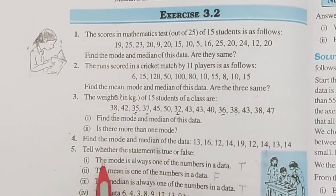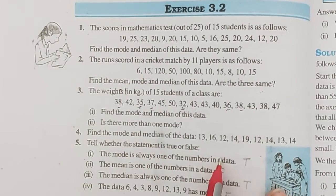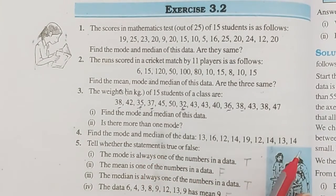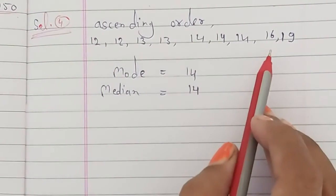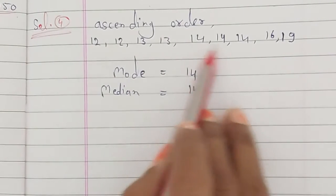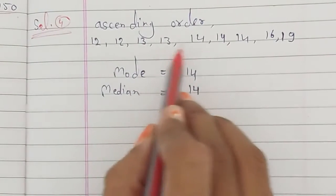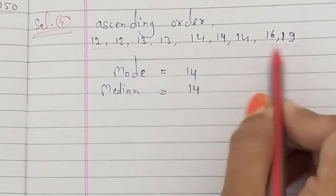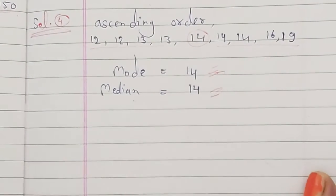Question 4: Find mode and median of the given data. Write in ascending order — small to big. Mode: looking at maximum frequency, 14 appears the most, so mode is 14. Median: total digits are 9, so skip 4 from each side — the middle value is 14. So median is also 14.